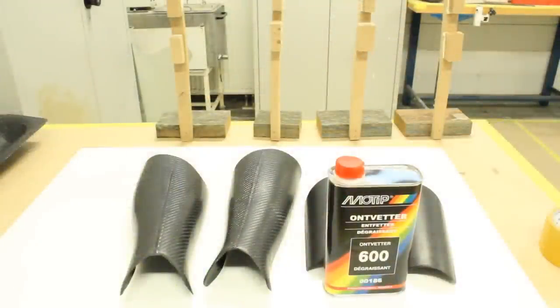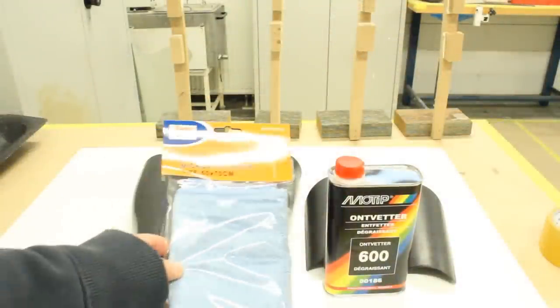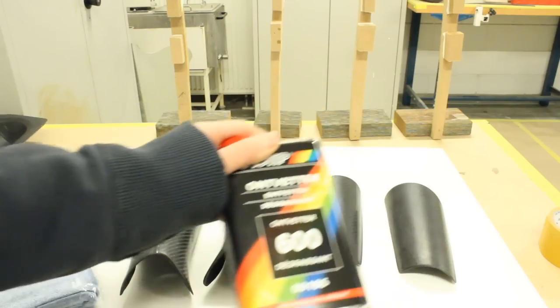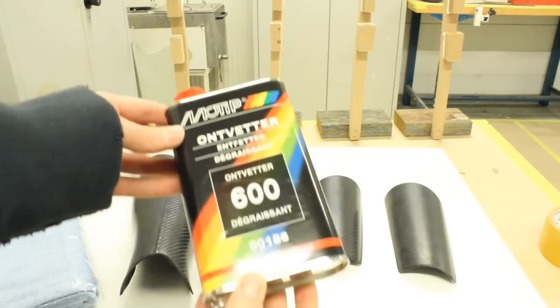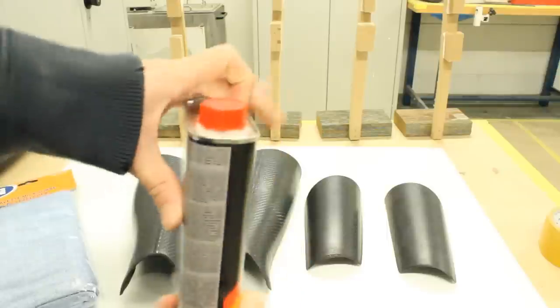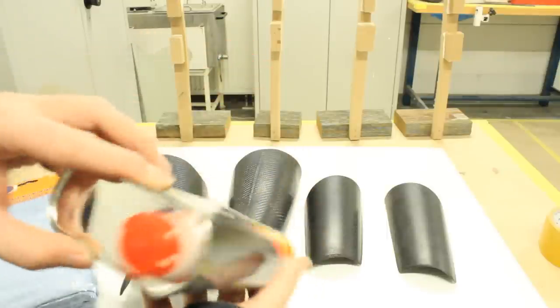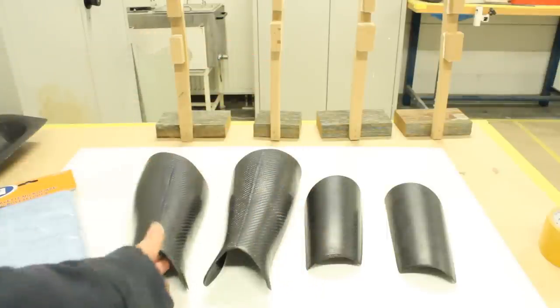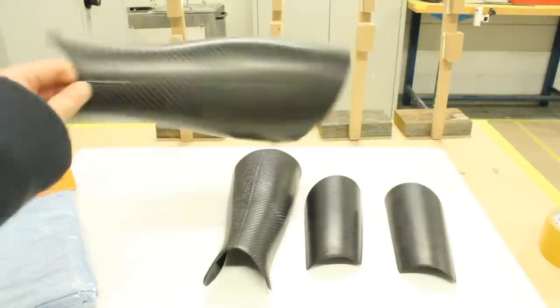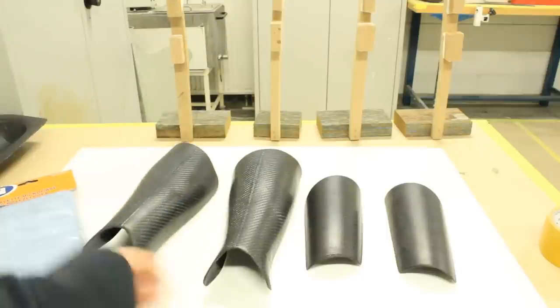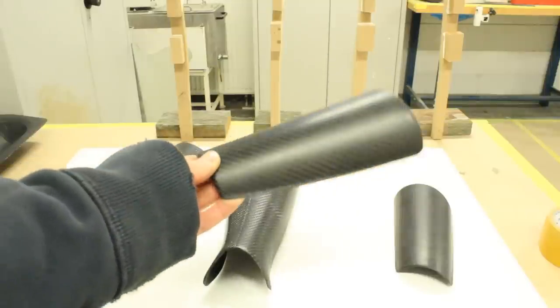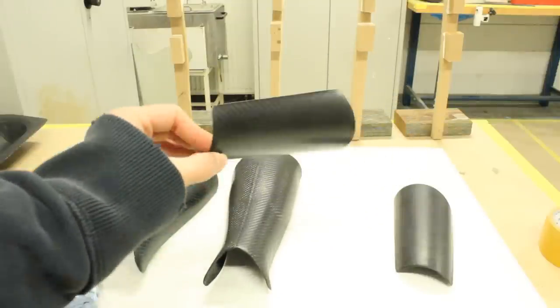After you did all the sanding, now you just need to degrease your parts to remove any dust, fingerprints, and so on. I'm using a Motip degreaser with microfiber cloths to avoid dust from the cloth going into the parts. It's always better to use a microfiber cloth just to be sure you don't have dust going onto your part.